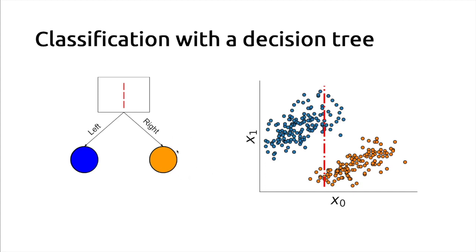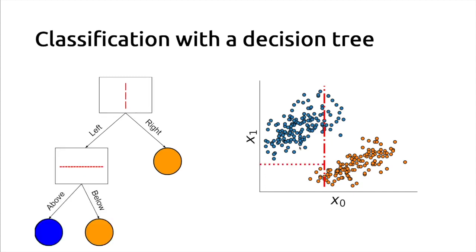After the first split, we haven't successfully partitioned the two groups — they are still mixed. The probability is not exactly 1 for blue; it's around 0.85. So we can develop the tree further by splitting this node again, inserting a new decision node. The optimal way to split this subset is to split horizontally using a threshold on x1 at a given position. In this case, we successfully separate all the blue points from the orange points, achieving 100% accuracy on the training set for those two leaf nodes.